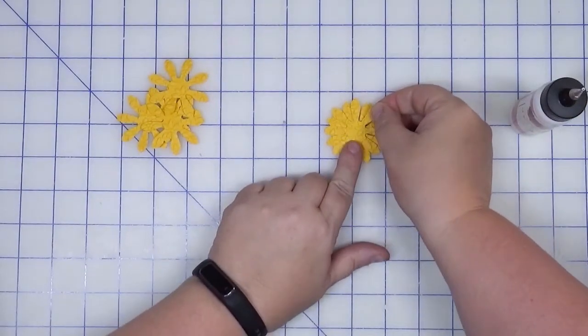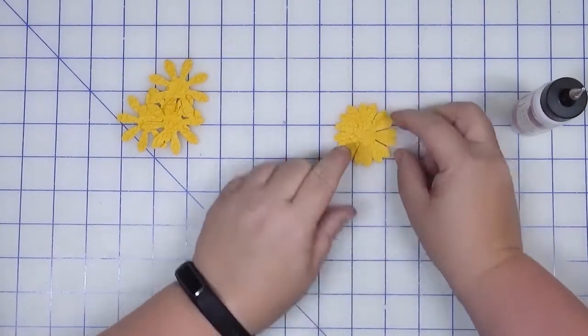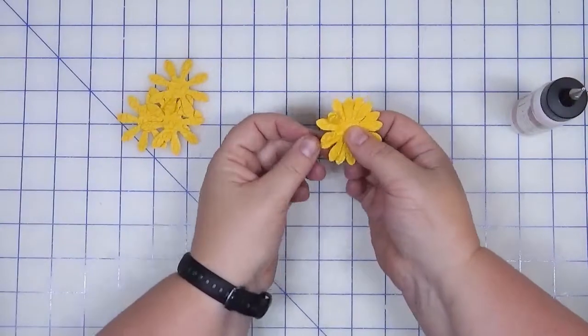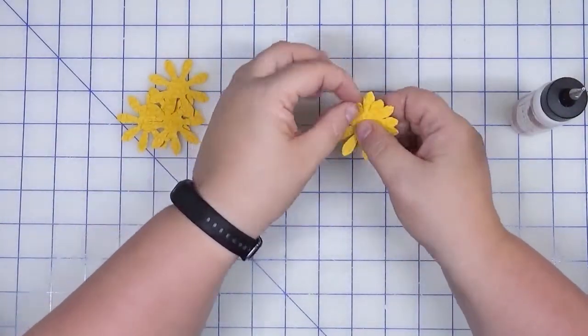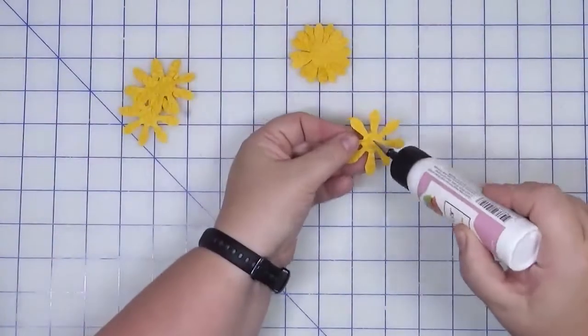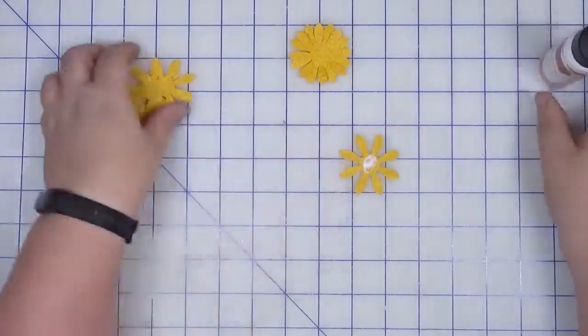Just stagger them like so. If you want to flip the petals up and around, that's fine, they'll probably get squished. Okay, we can do this again with the next one. We're making a set of three.